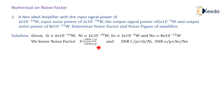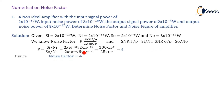SNR at input equals SI divided by NI, and SNR at output equals SO divided by NO. Substituting: F = (SI/NI) / (SO/NO) = (2×10⁻¹⁰ / 2×10⁻¹⁸) divided by (2×10⁻⁴ / 8×10⁻¹²). This gives 100×10⁶ divided by 25×10⁶. The 10⁶ terms cancel, leaving F = 100/25.